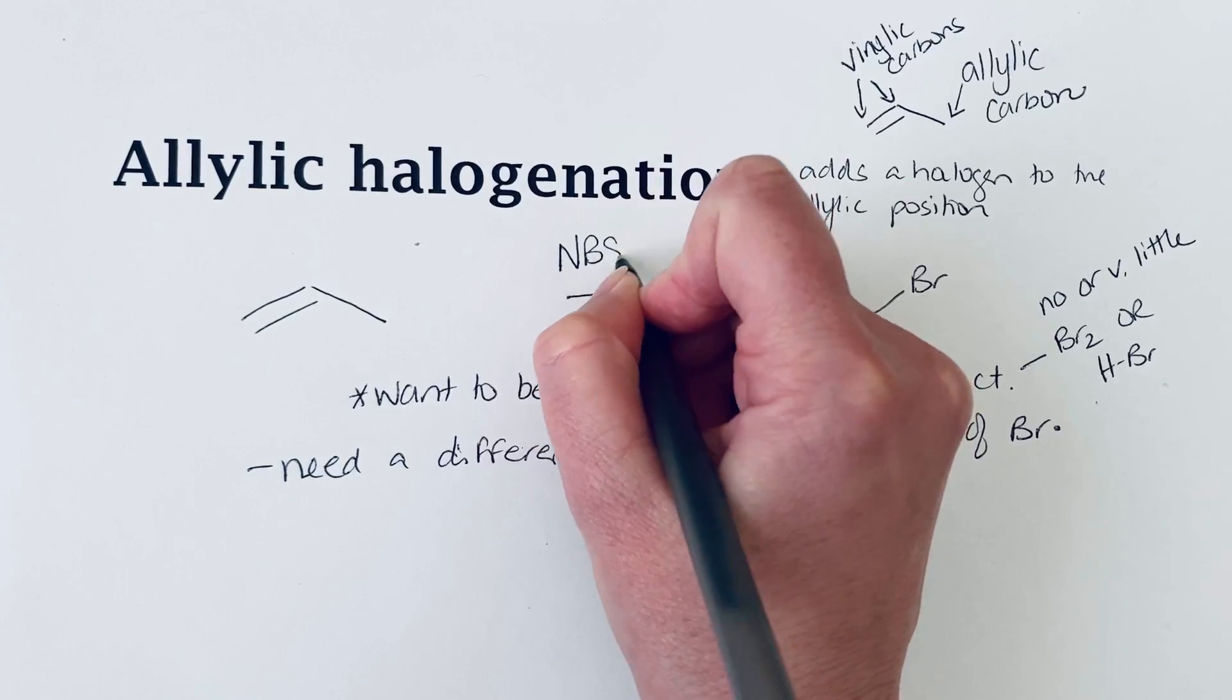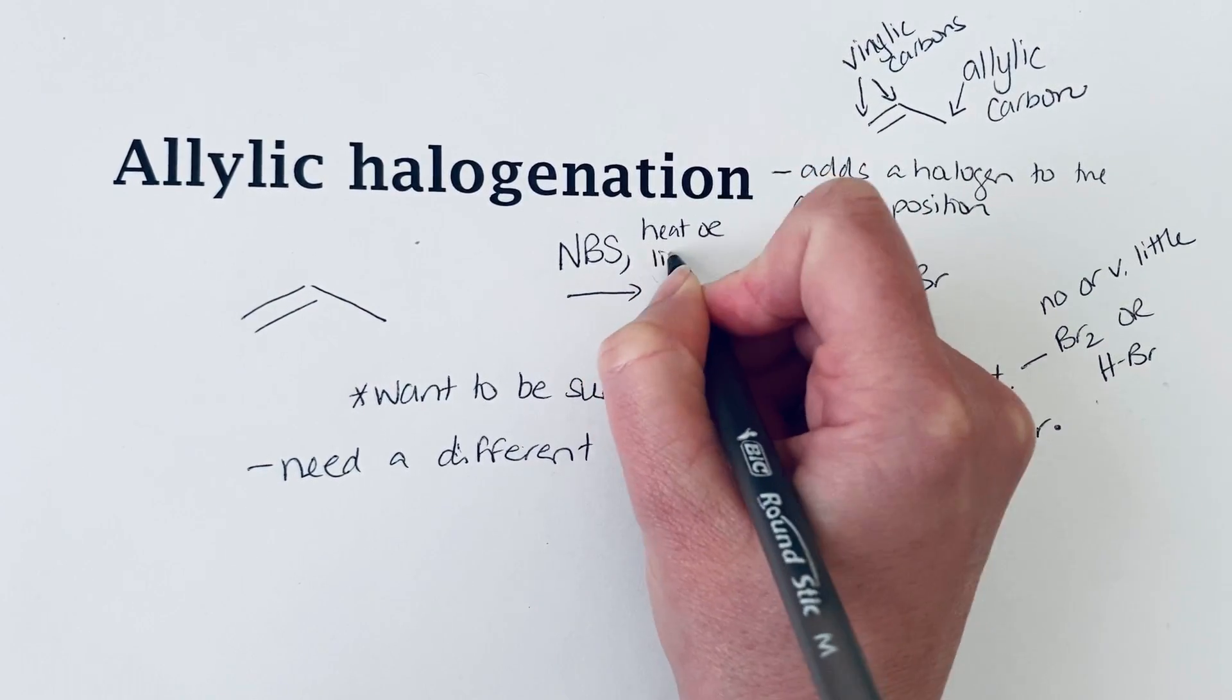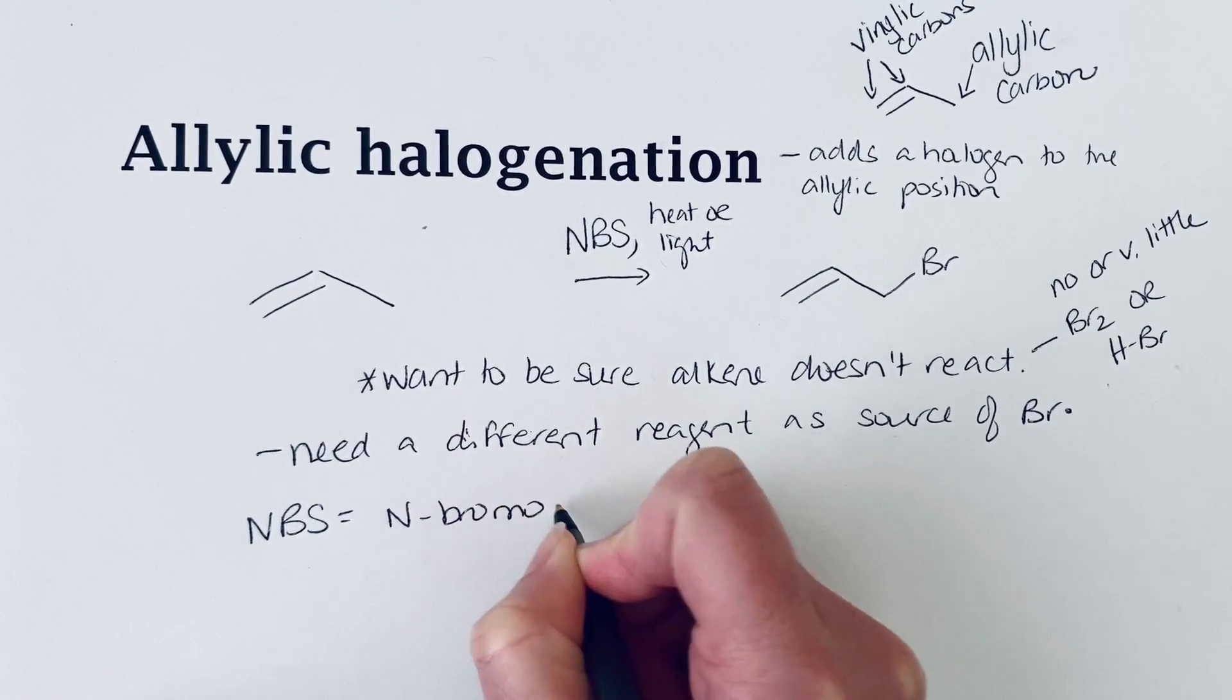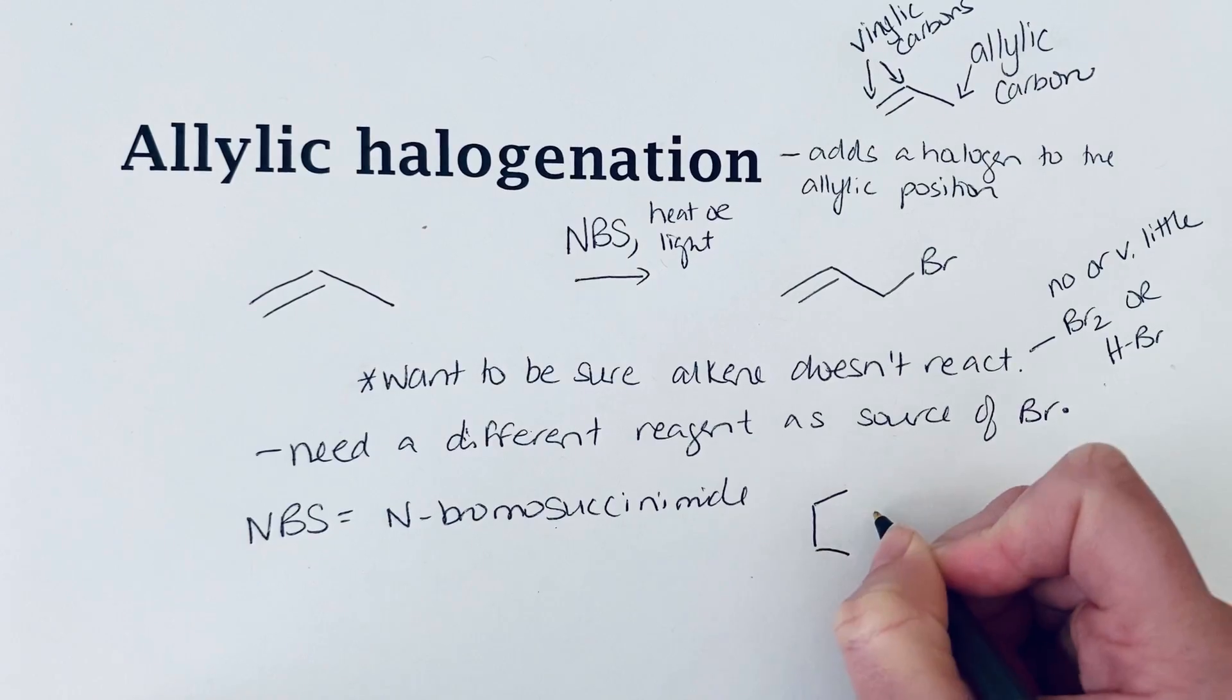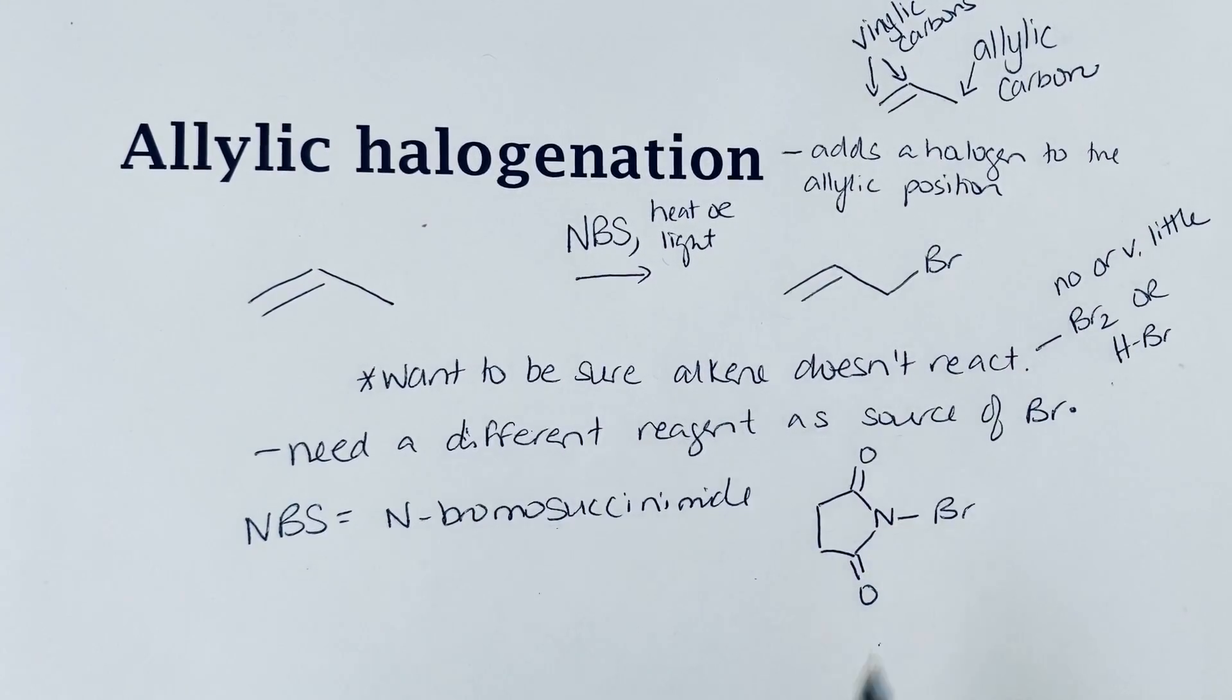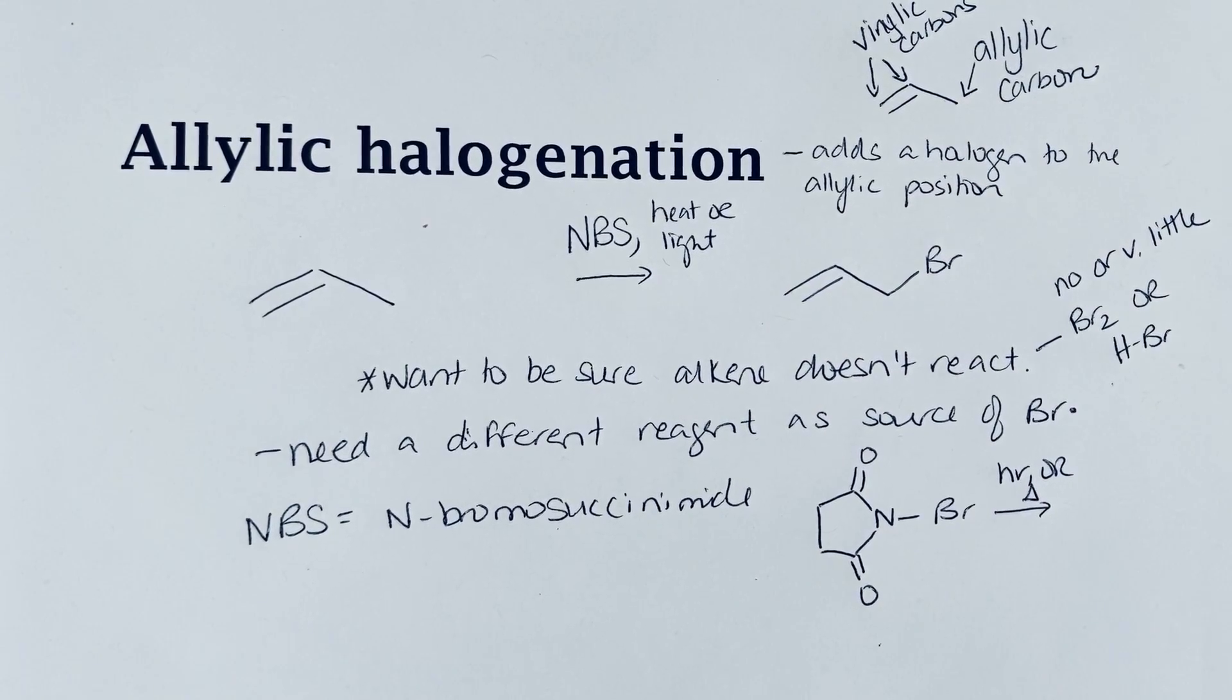NBS and something to initiate this radical reaction is the conditions that we need, something like heat or light. NBS is N-bromosuccinimide and it has this general structure. This bromine-nitrogen bond is a weak bond, and this is the bond that can cleave with light or heat to give us a bromine radical.